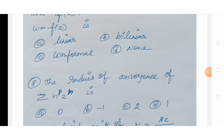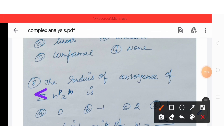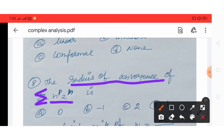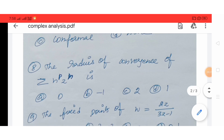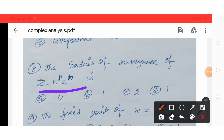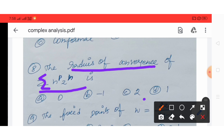Next question: The radius of convergence of summation n^p · z^n — Option A: 0, Option B: -1, Option C: 2, Option D: 1. The radius of convergence of Σn^p·z^n is 1. Option D is the correct answer.